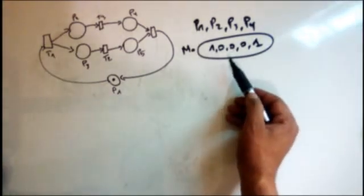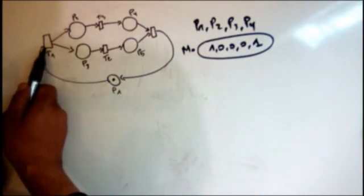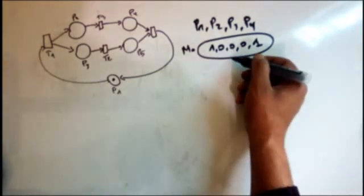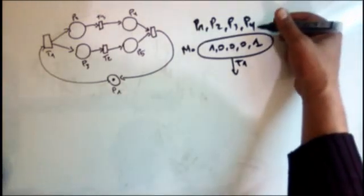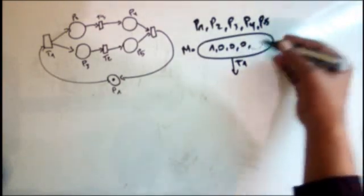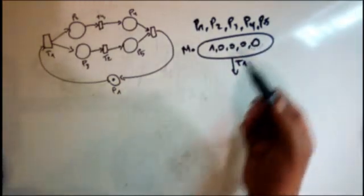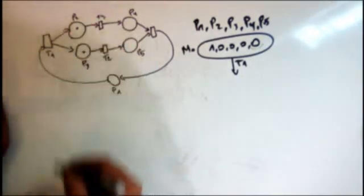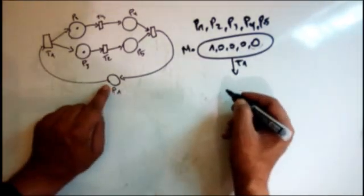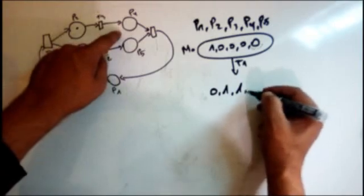From this initial marking, we can fire transition T1 — just T1 is fireable now. When we fire T1, we remove the token from p1 and add one token to p2 and one to p3. So the new marking is: zero for p1, one for p2, one for p3, zero for p4, and zero for p5.